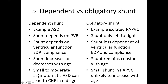A small to moderate sized asymptomatic ASD in childhood can result in congestive heart failure in old age due to left ventricular incompetence and diastolic dysfunction. But a small shunt in PAPVC is unlikely to increase with age. PAPVC is obligatory because it is always left to right. ASD is dependent because ASD can become right to left if PVR increases substantially. Dependent means it can be left to right, one-to-one, or right to left, whereas obligatory means it is always left to right.